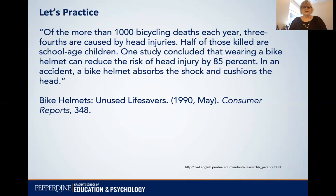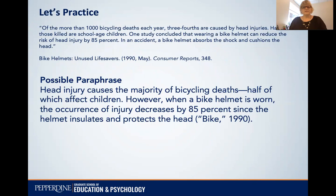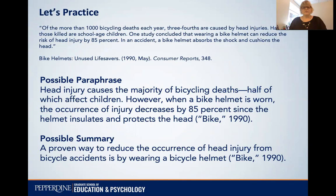Here's the original and here is a possible paraphrase: 'Head injury causes the majority of bicycling deaths, half of which affect children. However, when a bike helmet is worn, the occurrence of injury decreases by 85% since the helmet insulates and protects the head.' And here's a possible summary: 'A proven way to reduce the occurrence of head injury from bicycle accidents is by wearing a bicycle helmet.'